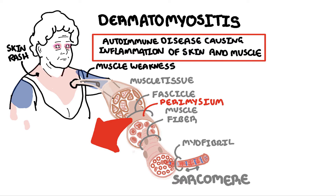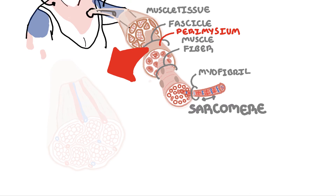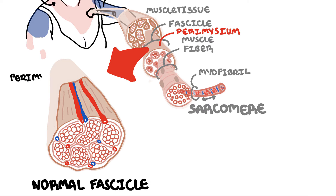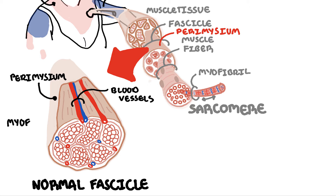Let's take a closer look at a fascicle, which is surrounded by the perimysium. Here you can also find blood vessels. The fascicle is made up of muscle fibers and myofibrils as we have learned.